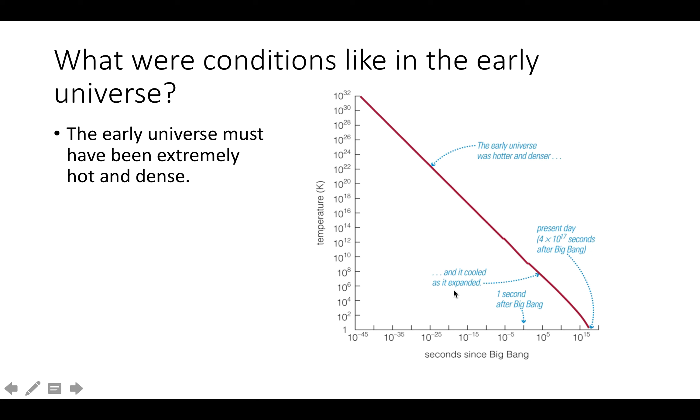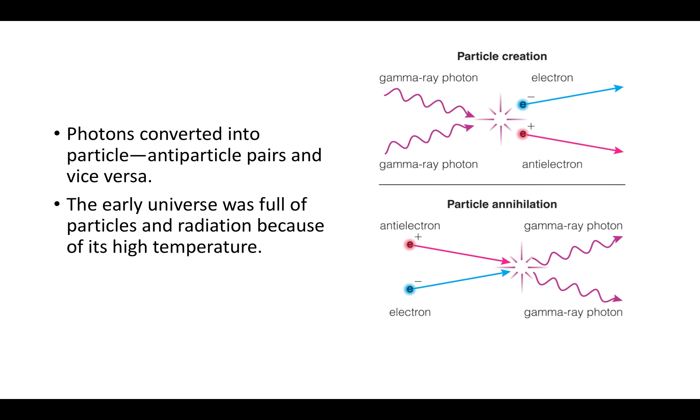So what were the conditions like in the early universe? Well, the early universe had to have been extremely hot and dense because the universe, as it cooled, it expanded. And by using the laws of physics and the current temperature of the universe, which is about three Kelvin, we can calculate just how hot the universe had to have been in the past. And so this graph shows the results. Just notice that everything is based on the powers of 10.